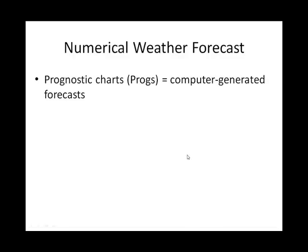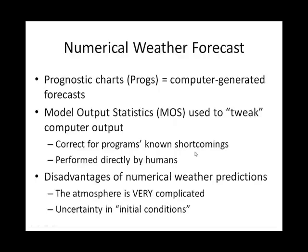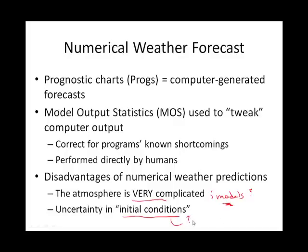Some general terms: prognostic charts are what the forecast is believed to be, and model output statistics can tweak the computer output a little bit. What kind of snags do we run into with numerical weather forecasting? The atmosphere is very complicated, so our models do the best they can, and we have to have different models for different parts of the world. Also, something called chaos — which I'll talk about in the next segment — has to do with those initial conditions. There's a little bit of uncertainty in all of those initial conditions, which is why forecasts sometimes go wrong.